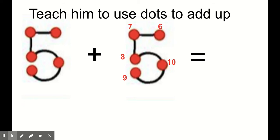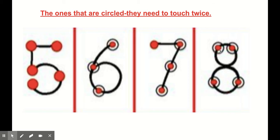Then they would record the answer. Now some of these have a circle around them. That means you would touch them twice. The number six has three dots and you would count through that twice. The number seven has four, then you come back up to the top and recount those. Eight has four.